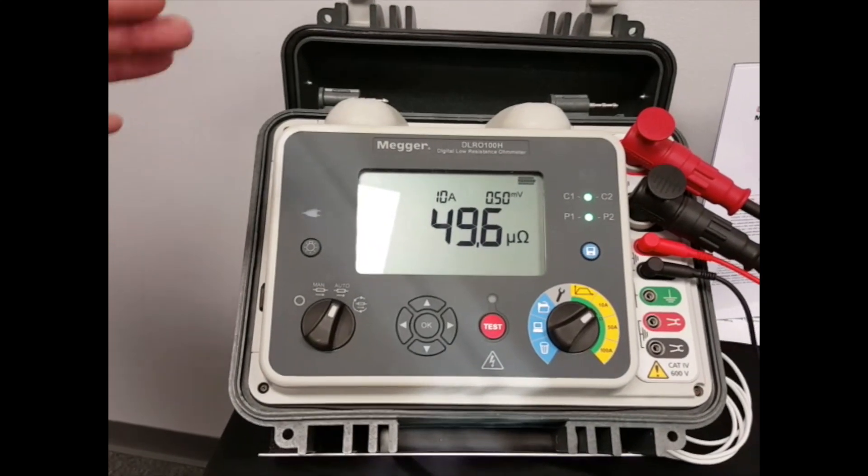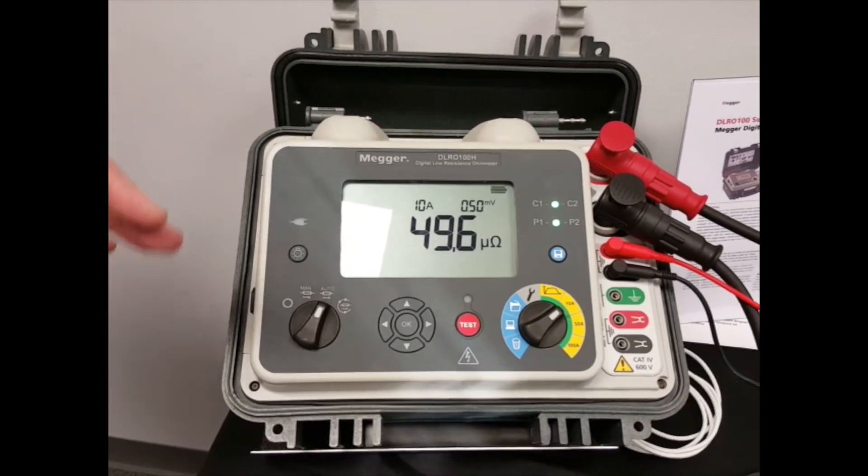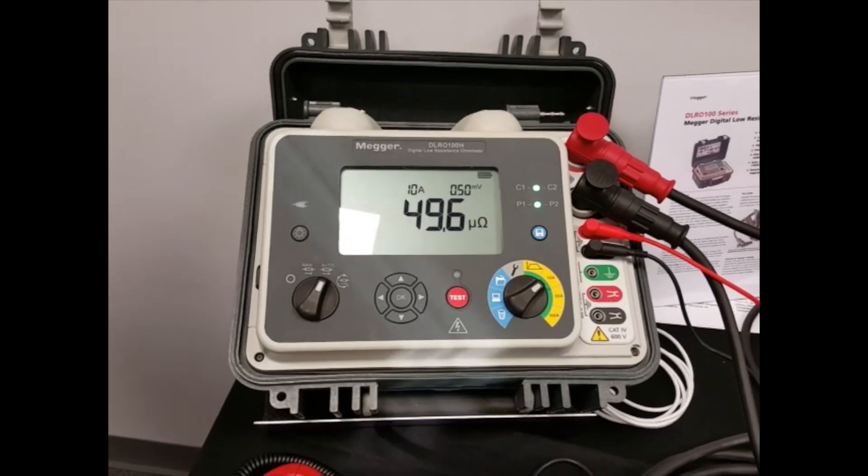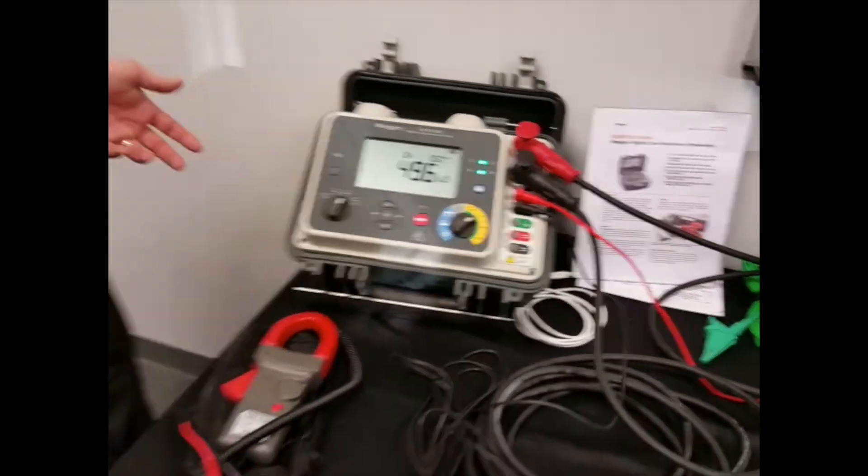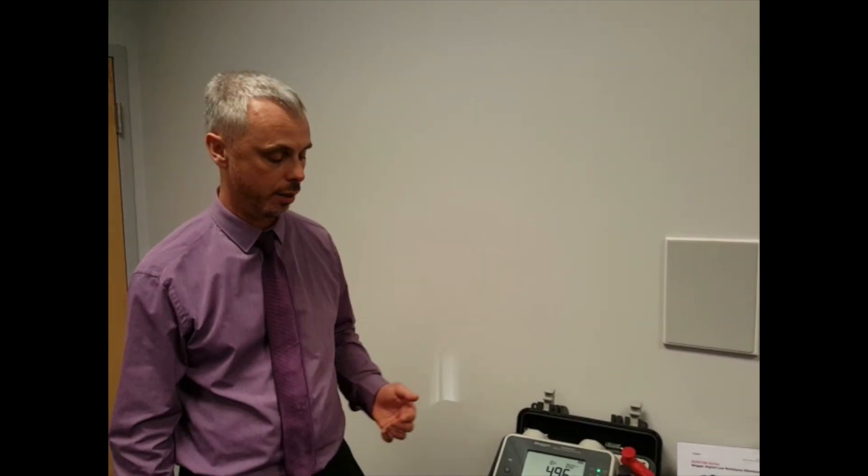So it ramps up the current, it holds it, it produces a very smooth DC output and then it will ramp down the test so that if you are testing a circuit breaker and it's still connected to a relay system, there's no way it will trip a relay system.